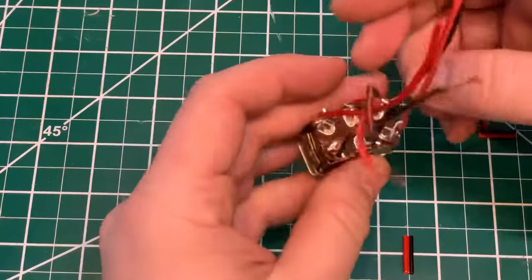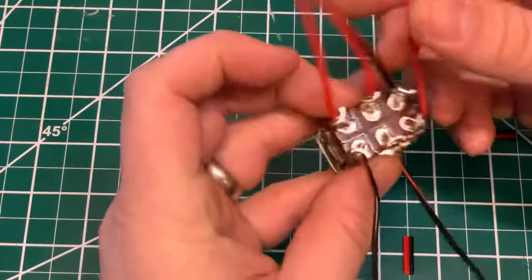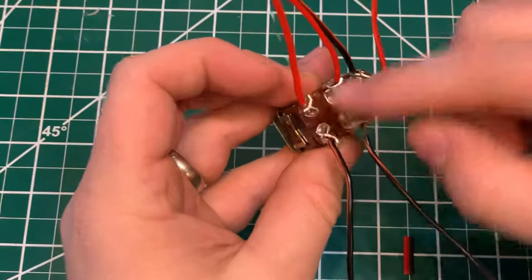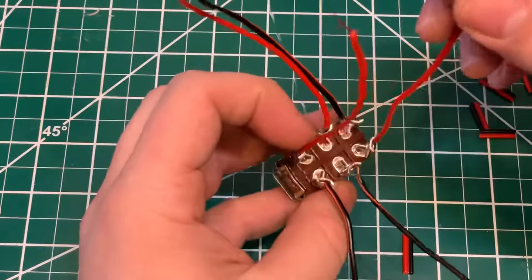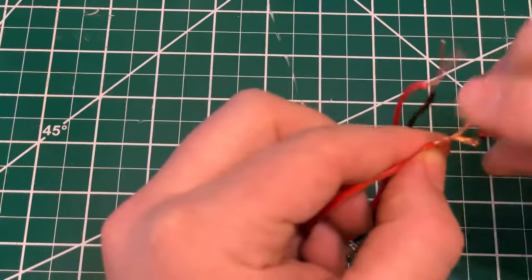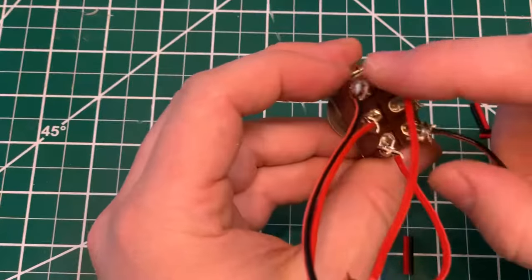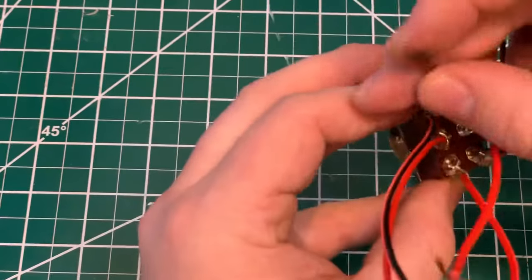So we're going to make a criss-cross pattern. So this one and this one are going to be connected together, and then this one and this one are connected together.